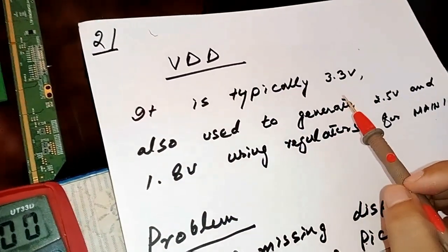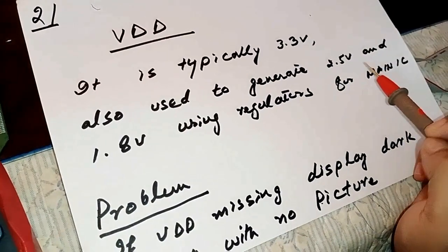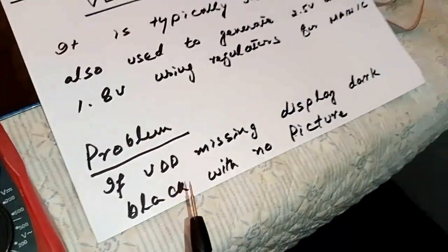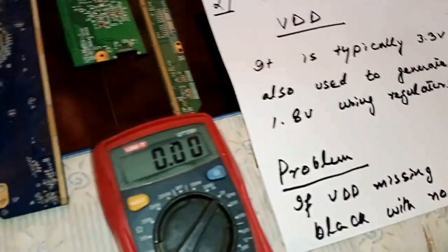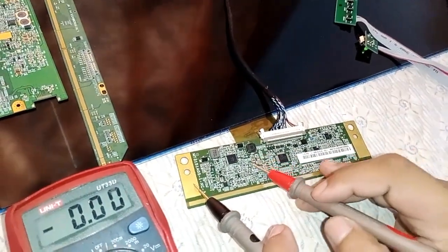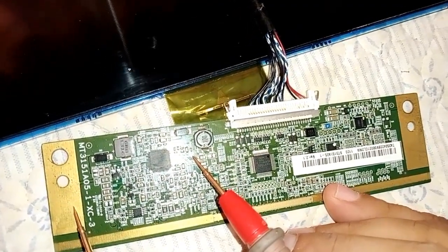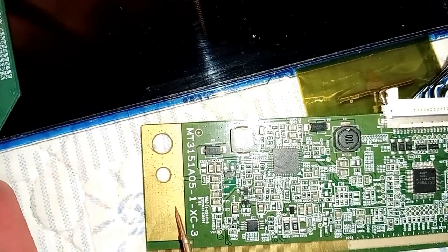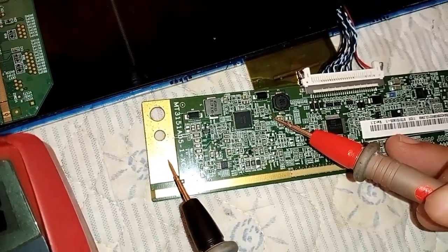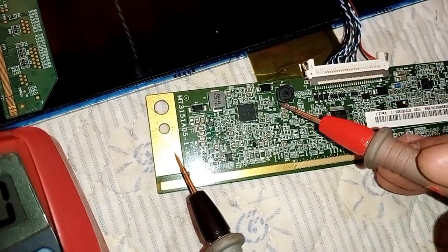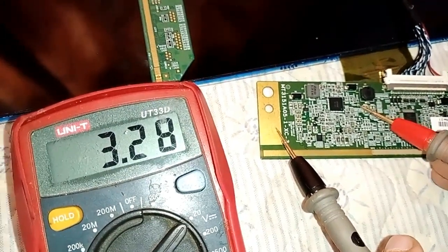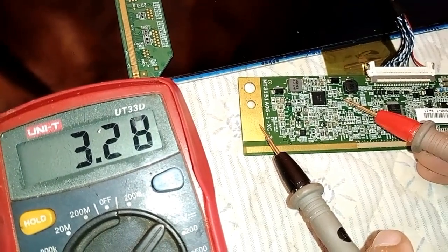The next voltage is VDD, which is typically 3.3V, also used to generate 2.5V and 1.8V using regulators for the main IC. If VDD is not present, the problem with your panel is a dark display or black screen with no picture. On the PCB you can see VCC labeled points at approximately 3.3V.